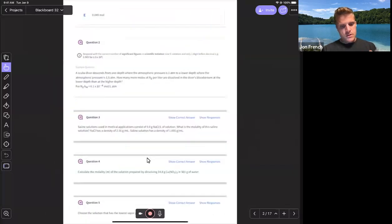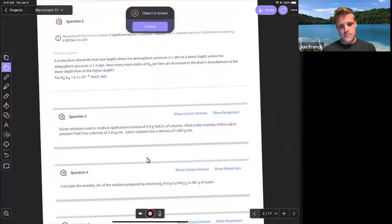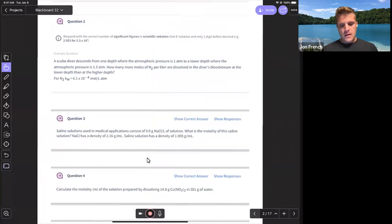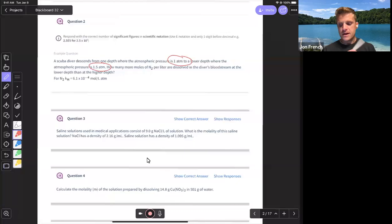Question two. A scuba diver descends from one depth where the atmospheric pressure is one ATM to a lower depth where the atmospheric pressure is 1.5 ATM. How many more moles of nitrogen per liter are dissolved in the scuba diver's bloodstream at the lower depth, given that the Henry's law constant for nitrogen is 6.1 times 10 to the minus four?